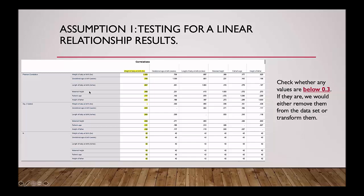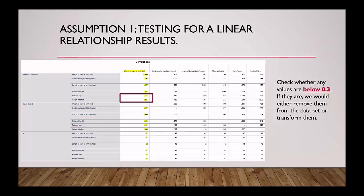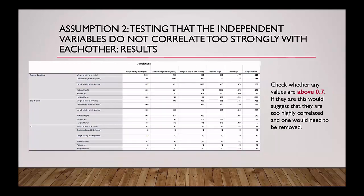If you have a lot of independent variables, making a scatter graph with each independent variable and the dependent variable might be too time consuming, so another thing you can do is look at the Correlations table. You want to look at the first column, which will show you the correlations for the weight of the baby at birth — our dependent variable — with all the independent variables: height of father, father's age, maternal height, length of baby, and gestational age. The Pearson's correlation statistics are shown at the top. You want to check whether any of these values are below 0.3; if they are, you may want to remove them from the dataset or transform them. As you can see, all of our independent variables have a linear relationship with the dependent variable except for father's age and height of father, as these statistics are below 0.3.